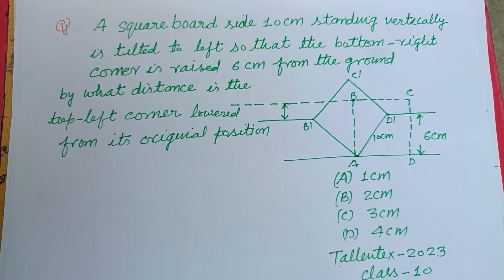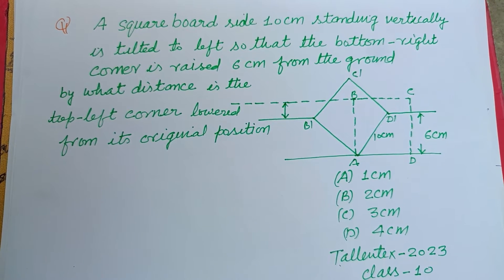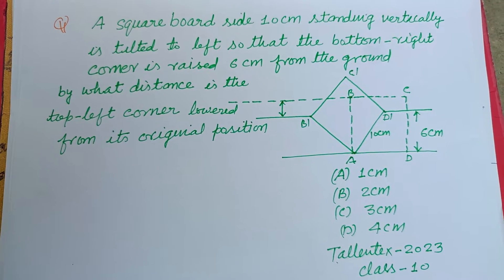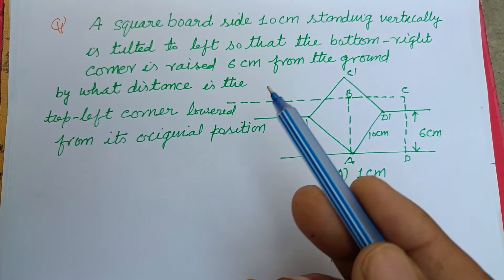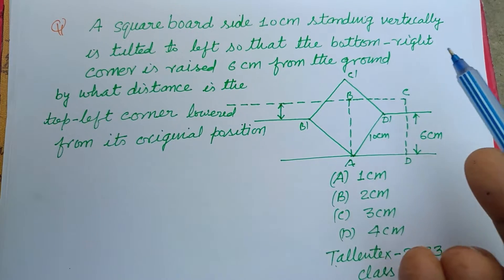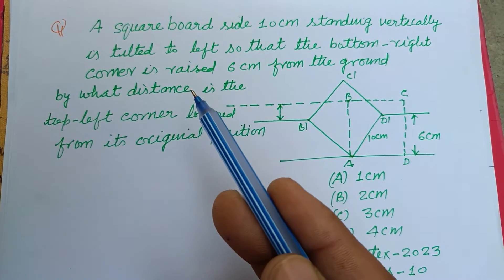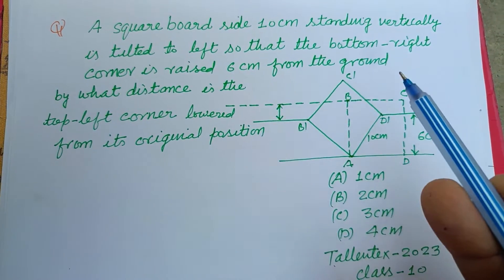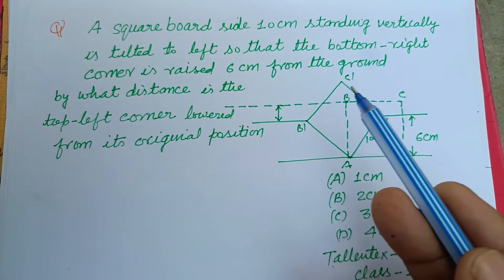Hello viewers, warm welcome to this YouTube channel. Question from Talent Text 2023, Class 10: A square board side 10 centimeter standing vertically is tilted to left so that the bottom right corner is raised 6 centimeter from the ground.